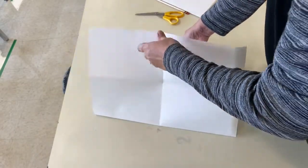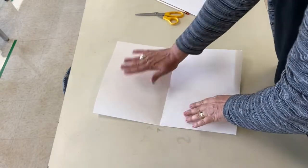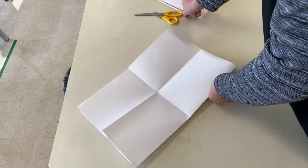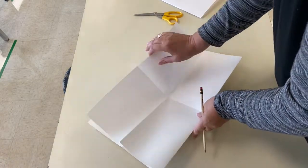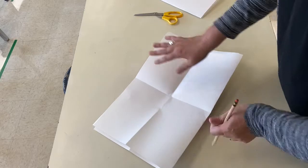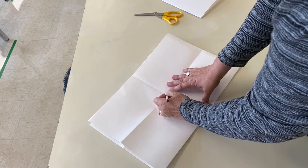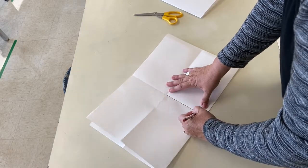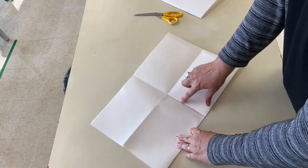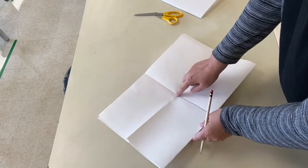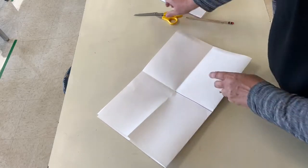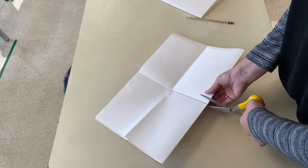Now I'm going to fold it the hamburger way. I'm going to have the folded side toward me and the open side away from me. I'm going to take my pencil and draw a line on that crease from the fold to the intersection right here.